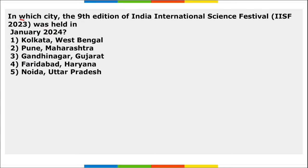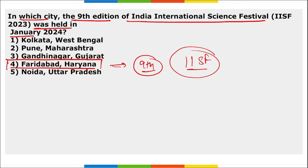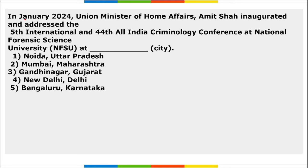The 9th edition of the India International Science Festival was held in Faridabad, Haryana. The central theme was 'Science and Technology Public Outreach in Amrit Kaal.'